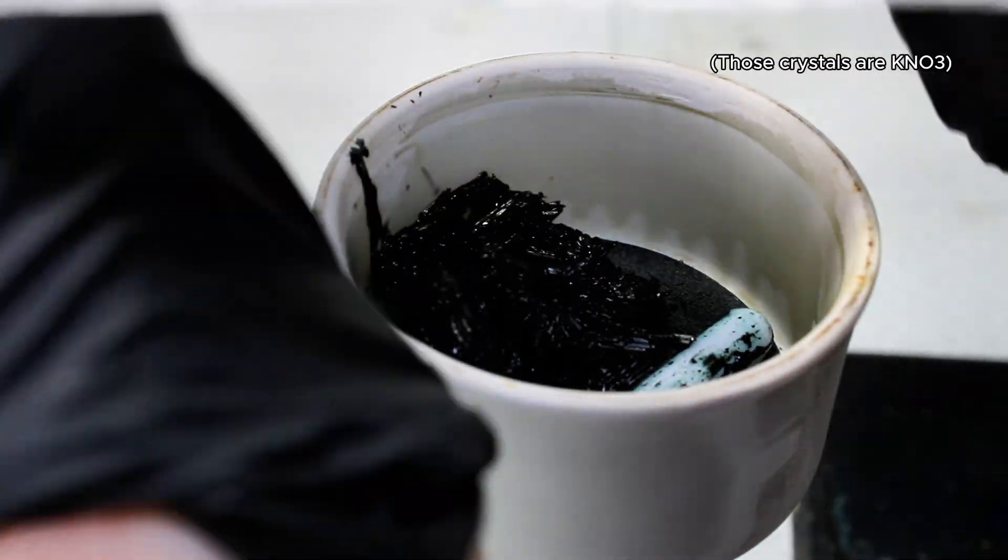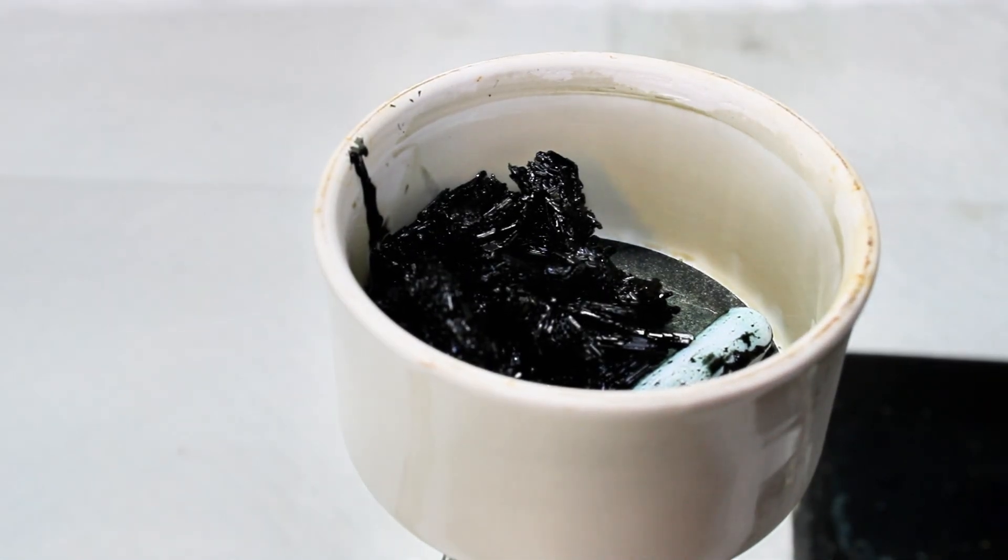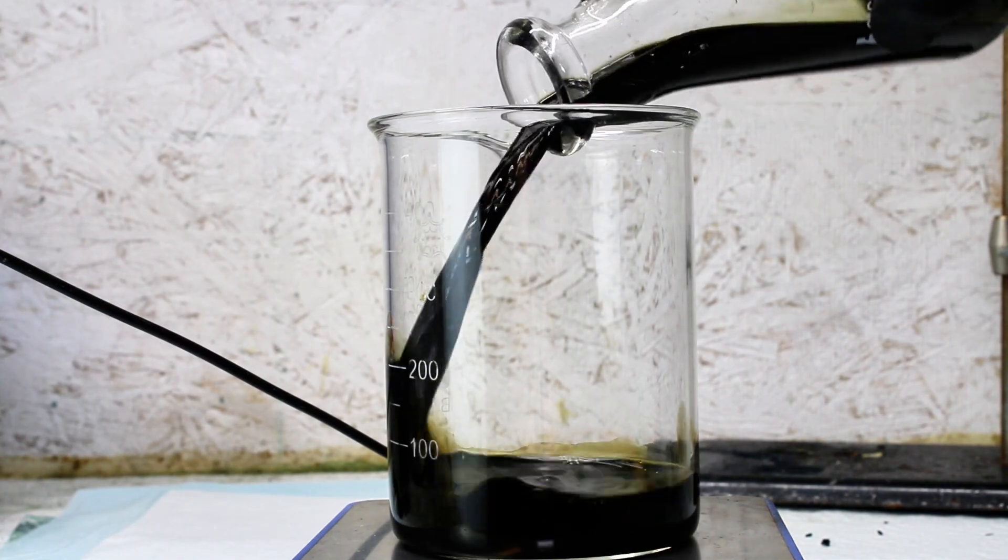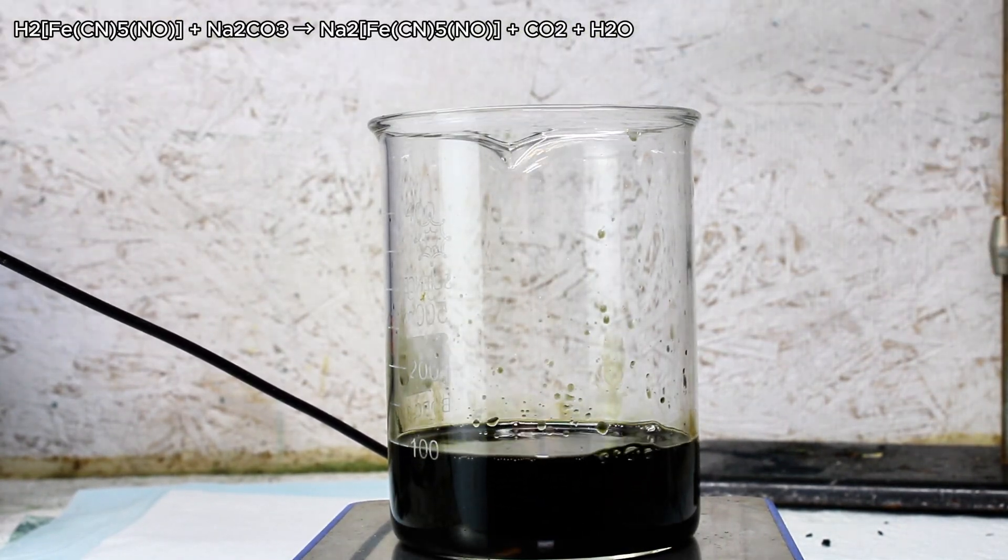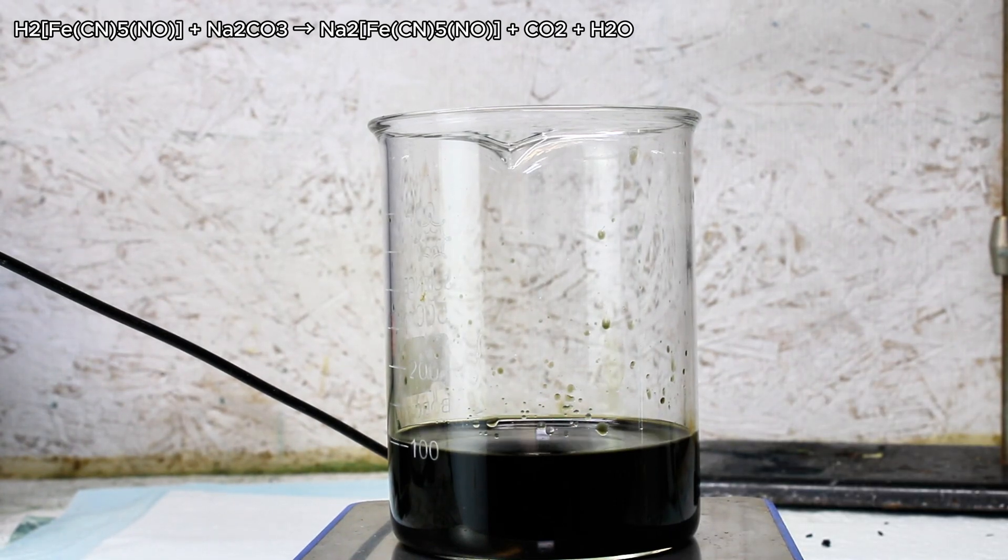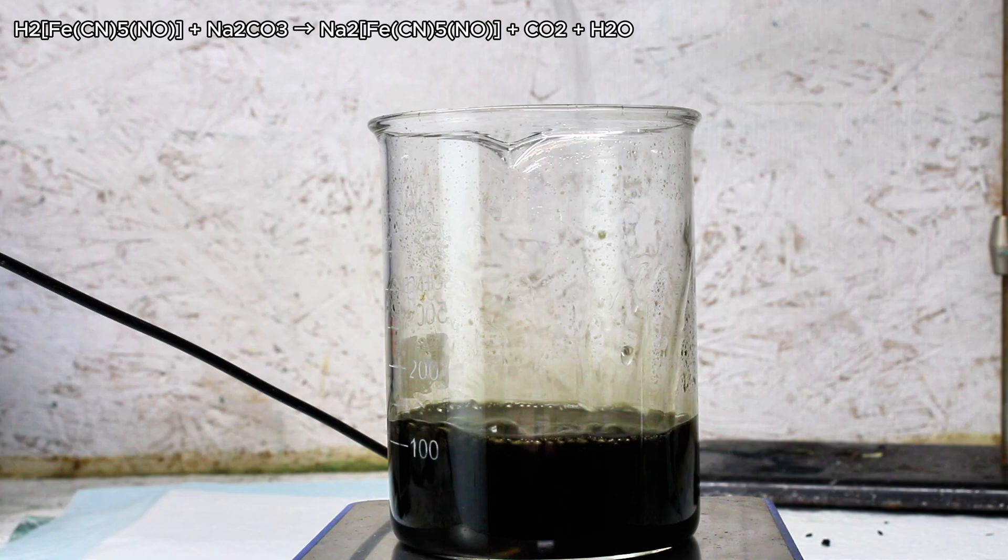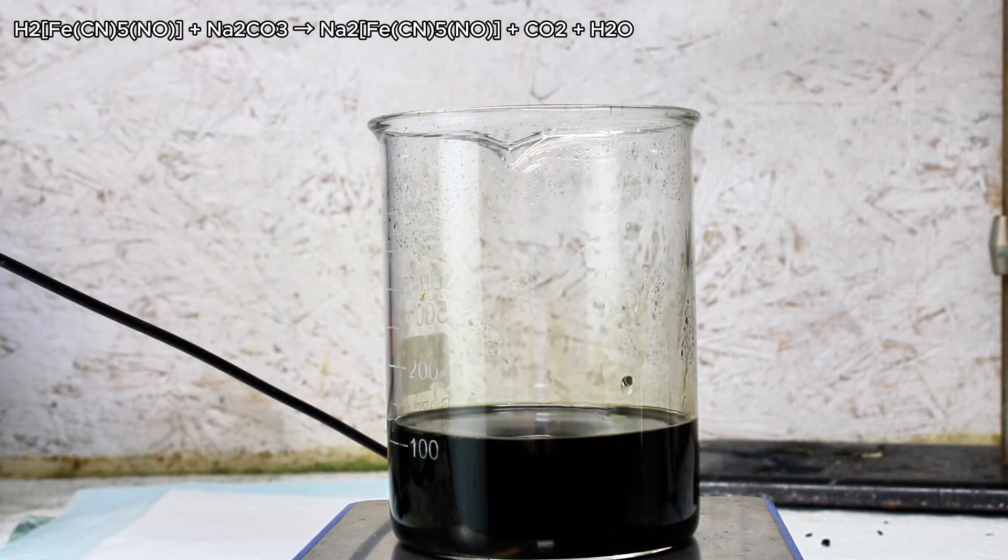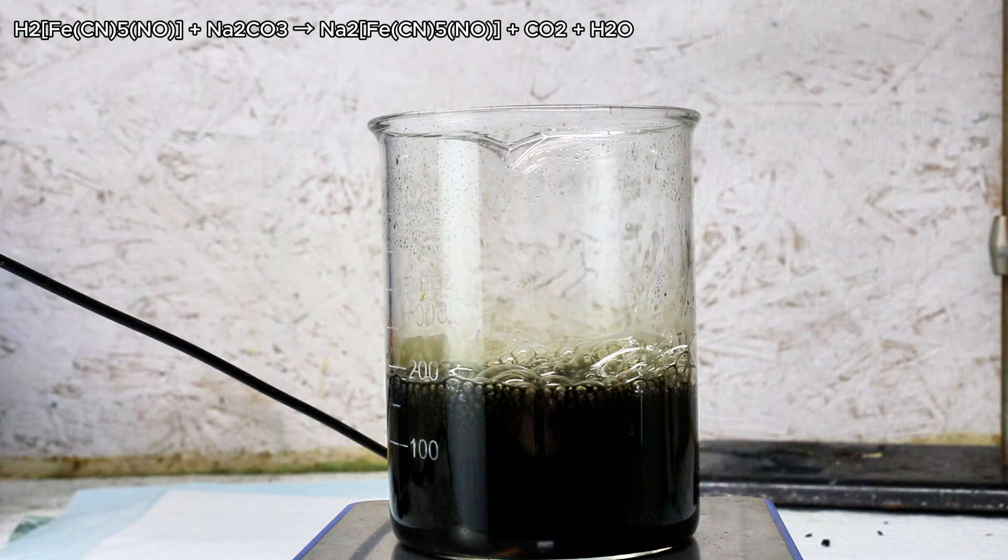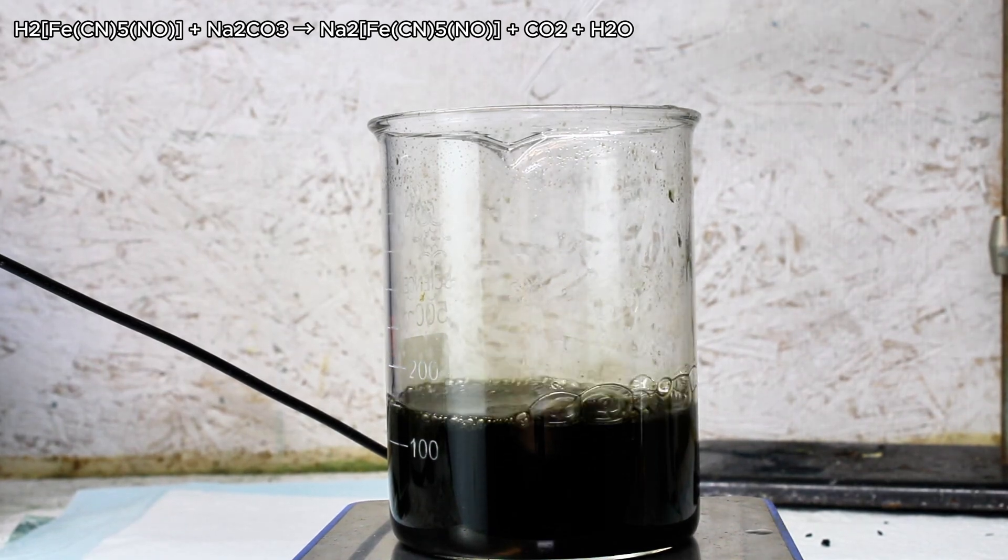I then transferred my filtrate to a beaker and slowly neutralized it with a saturated solution of sodium carbonate. This reaction will result in the formation of my sodium nitroprusside along with carbon dioxide gas. Sodium nitrate is also formed by reacting with excess nitric acid, and I'm sure there's a few other side reactions going on here with my unknown byproducts.